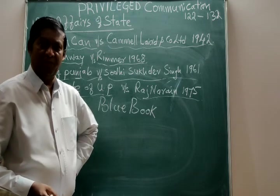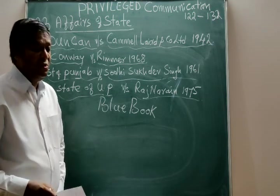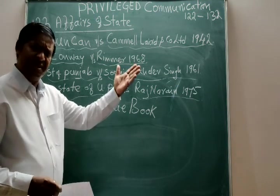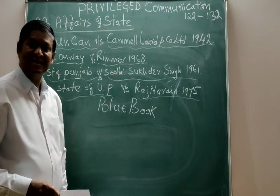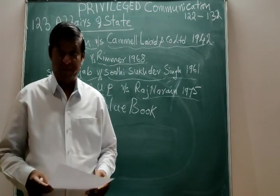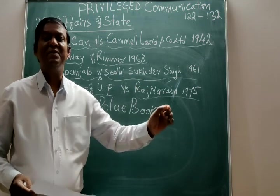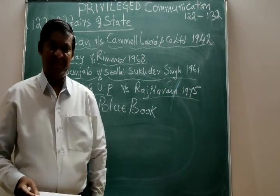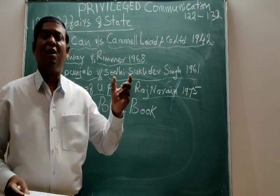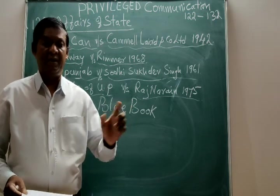One day Raj Narayan wanted to know the details and secrecy of the blue book, but the authorities refused to disclose it because it is related to the security of the Prime Minister. He challenged that refusal, demanding full disclosure, and the matter came before the court. The Supreme Court held: no — whoever may be the Prime Minister, he is the head of the country and needs protection. There are hundreds of secrets that must be maintained, so the blue book is considered affairs of state — no disclosure.